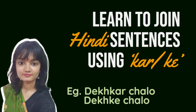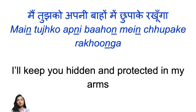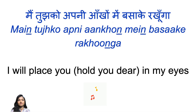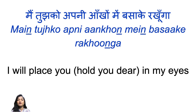I've explained the usage of ke and kar in one of my videos on my channel — you can check that out too. The same chorus line again: Tu maan meri jaan, main tujhe jaane na dun ga — believe me my love, I won't let you go. Main tujko apni aankho mein basa ke rakhun ga. The structure is the same as the previous sentence. Basa ke comes from basana, which means to place or to settle, and rakhun ga is will keep — so I will settle you in my eyes and keep you forever. In other words, I'll hold you dear.